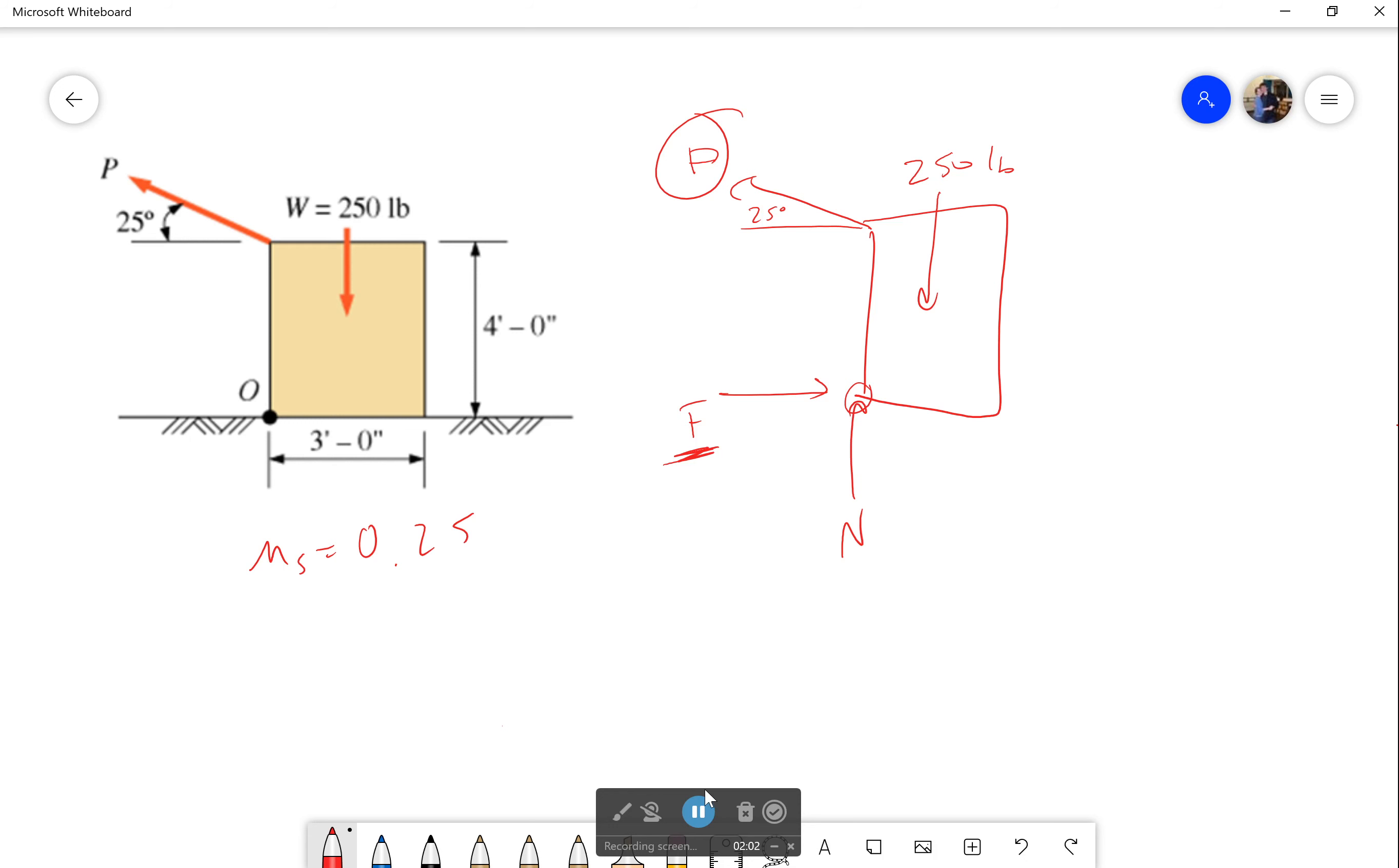So I'm going to take my moment around this point, get rid of the other two unknowns. And so sum of the moments is going to be equal to 250... Oh I didn't label this. Let's dismiss this. That's 1.5 and that's 4. 250 times 1.5 minus P and that's going to be cosine 25 because it's adjacent over hypotenuse, cosine of 25 times 4. And if I solve, I get that it's equal to 103.5 pounds.